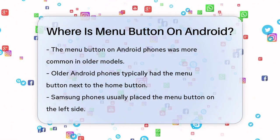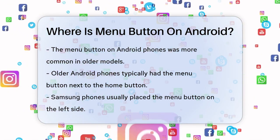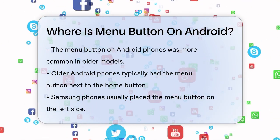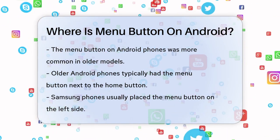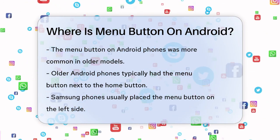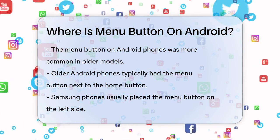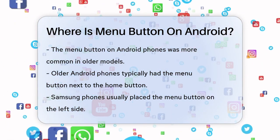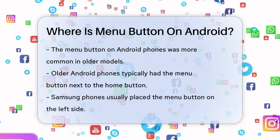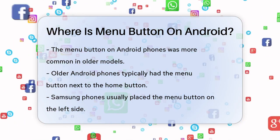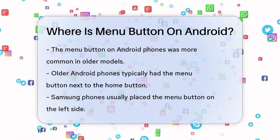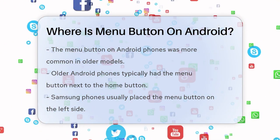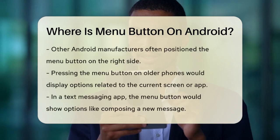First off, if you have a newer Android phone, you might not even find a dedicated menu button. This button was more common on older Android phones, typically found on the left or right side of the home button. For Samsung phones, the menu button was usually on the left side, while other Android manufacturers placed it on the right.